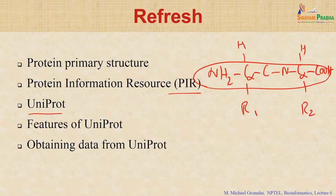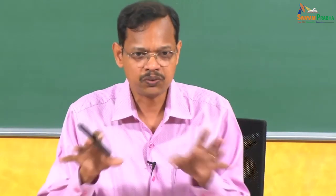UniProt is now the universally accepted protein sequence database. Its major features include: high level of annotation, minimum redundancy, and high integration with other databases. UniProt classifies information into three groups: general information regarding the sequence, structure, and function of a protein; sequence, structure, and interaction information with links to other databases; and information about enzymes and pathways. It has high integration and links with all other databases and the literature.